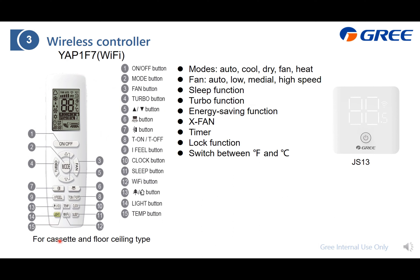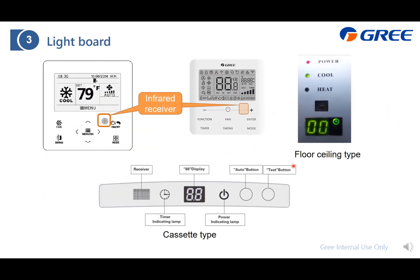For the cassette type and the floor-ceiling type, the receiver is built in. Here you can see the built-in infrared receiver for the floor-ceiling type, and this is the infrared receiver for the cassette type. For the duct type, you must install this wire controller, and there is also an infrared receiver here that can receive the wireless remote controller's control signal.